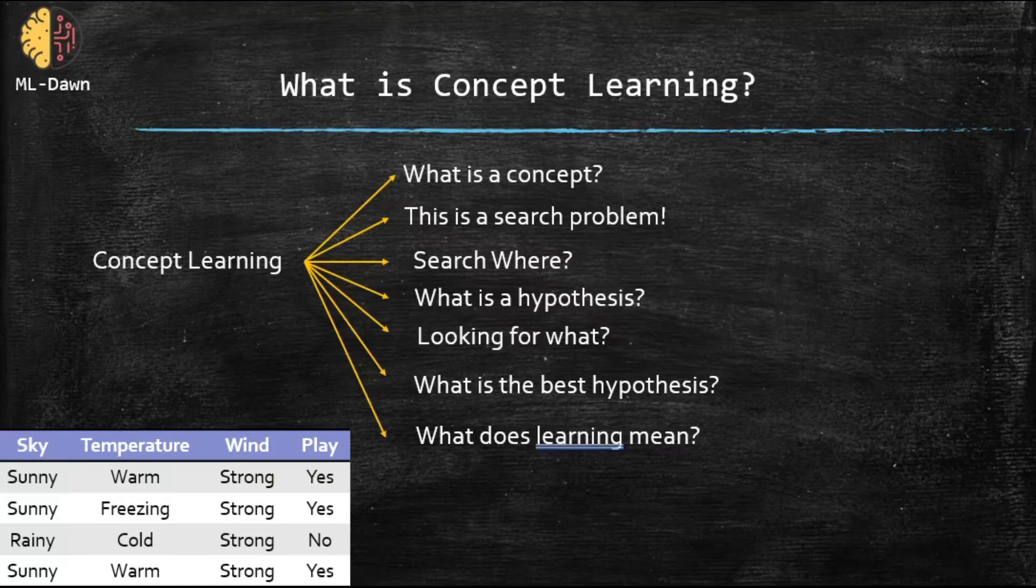Number one, what is a concept? A concept is a spirit, or a group, or a category of something. Let me give you an example. For example, bird can be a concept. The concept of bird encompasses all the birds around the world that have ever existed, exist, or will come to existence.